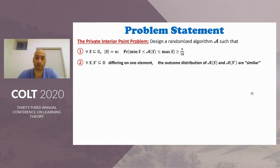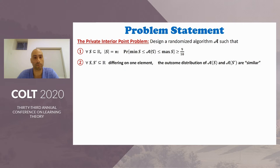Here is a statement of the problem I want to solve today. We call this the private interior point problem. Our goal is to design a randomized algorithm A satisfying two requirements simultaneously. The first requirement states that when you give the algorithm a multiset containing n points from R, then with high probability — say 9 over 10 — the algorithm gives you something between the minimal and maximal input point, i.e., something in the convex hull in one dimension. We call such a point an interior point of the input multiset S.